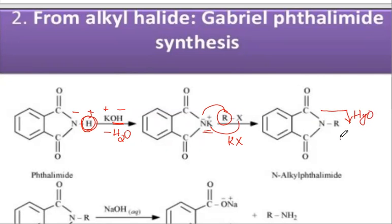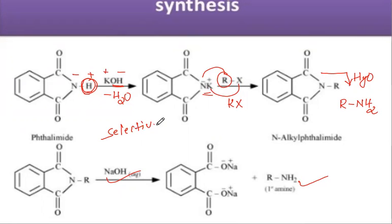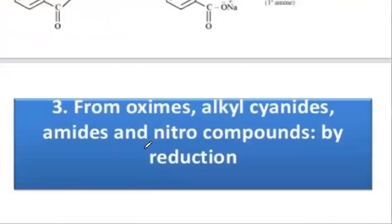under hydrolysis in basic medium, we get RNH2 — a primary amine — as the major product. This is called the Gabriel phthalimide reaction. By using this method, we can prepare specifically primary amines. This is a very selective method — by this method you can produce only primary amines.